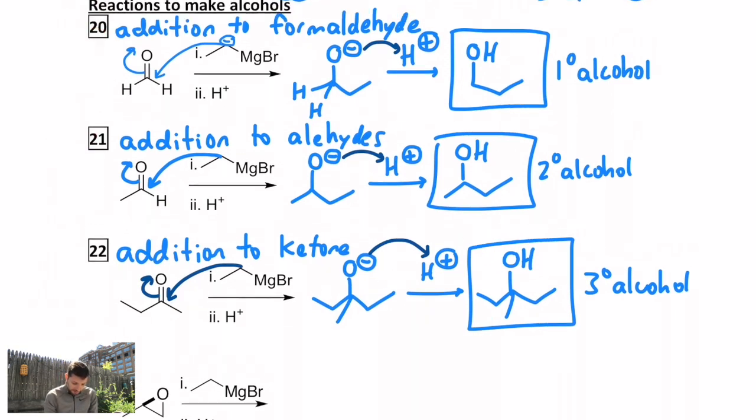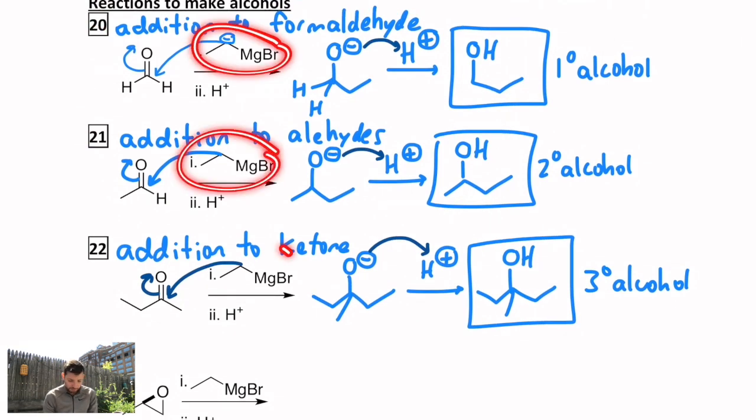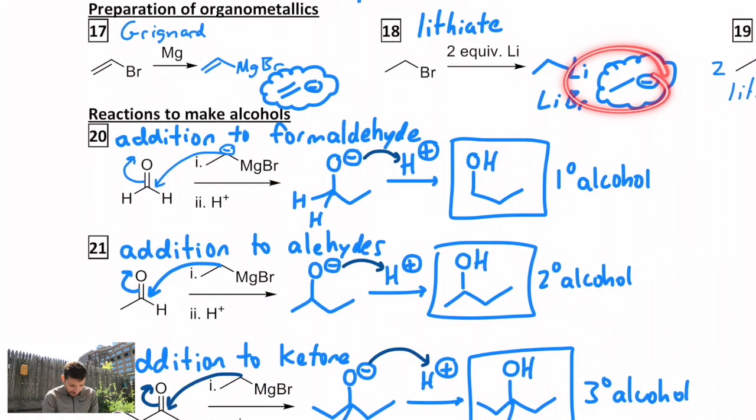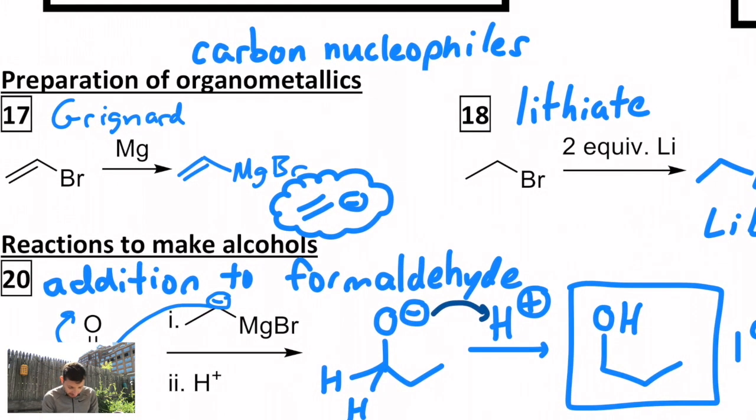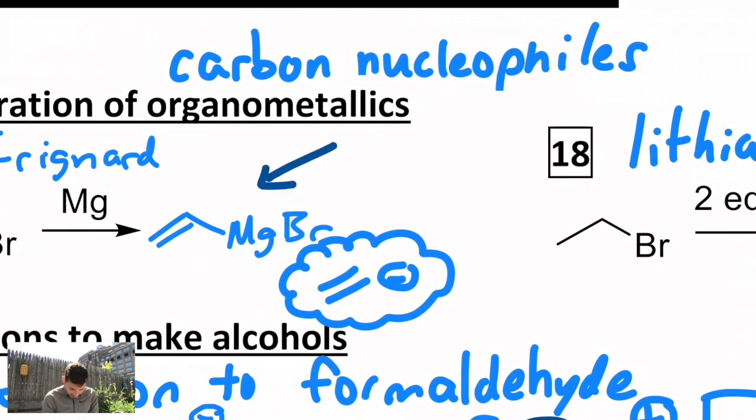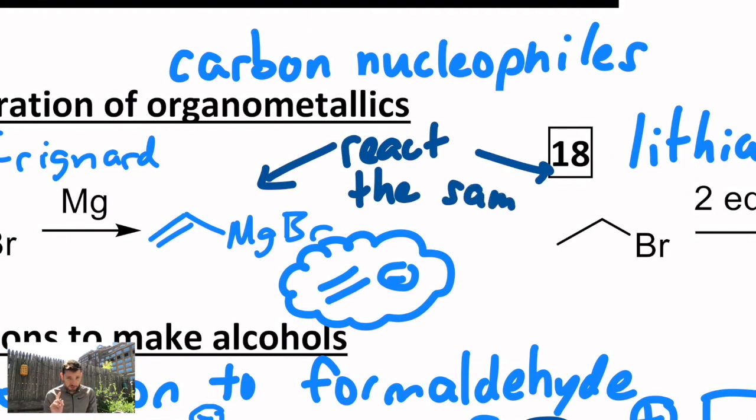And even though I'm using a Grignard as an example, the organomagnesium reagent, the organolithiate behaves exactly the same way. In fact, I'll make a note of that up here. Lithiates and Grignards behave the same. React the same. The one that's a little different is cuprates. So we'll come back to cuprates in a little bit when we see how they react a little differently.